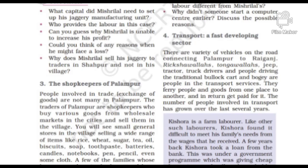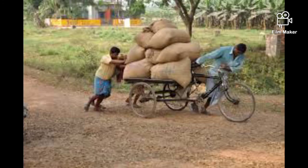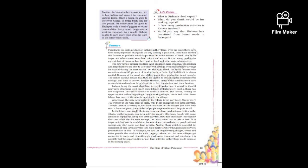Point number four: transport — a fast developing sector. Transport is among the non-farm activities in Palampur. Various vehicles like jeeps, tractors, and trucks ply between the village and nearby towns such as Raiganj. Many people in Palampur earn a living by driving or operating transport vehicles.